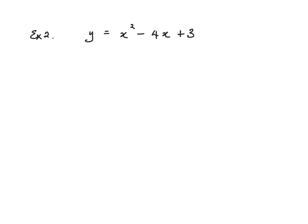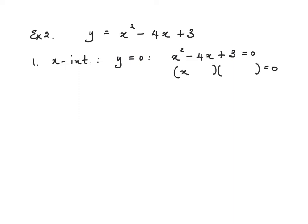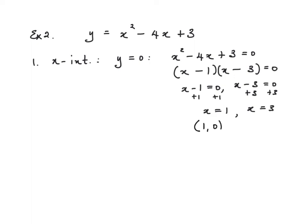Second example. First thing to do is work out the x-intercepts, which are always found when y equals 0. So x squared minus 4x plus 3 equals 0. x and x are going to be 3 and 1, with signs the same and both negative. So x minus 1 equals 0 and x minus 3 equals 0. Adding 1 to both sides gives x equals 1; adding 3 to both sides gives x equals 3. The x-intercepts are (1, 0) and (3, 0).